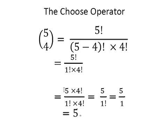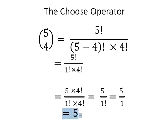As remarked earlier, 5 factorial can be written as 5 times 4 factorial. So 4 factorial in the numerator and denominator cancel each other out, leaving us with 5 divided by 1 factorial, which is simply 5 divided by 1. The answer is five.